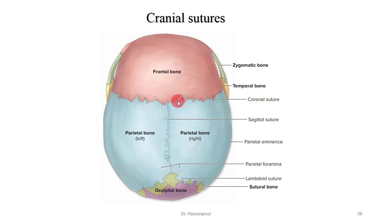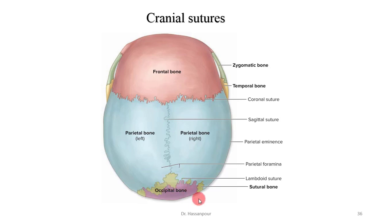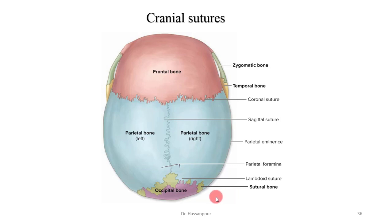The coronal suture extends across the superior surface of the skull along a coronal or frontal plane. It represents the articulation between the anterior frontal bone and the posterior parietal bones. The lambdoid suture extends like an arc across the posterior surface of the skull, articulating with the parietal bones and occipital bones. It's named for the Greek letter lambda, which its shape resembles. One common variation in sutures is the presence of sutural bones or Wormian bones, which are most common and numerous in the lambdoid suture.